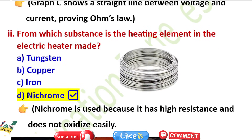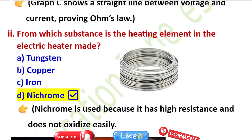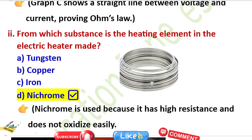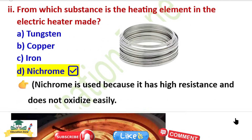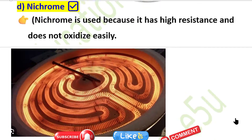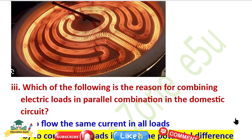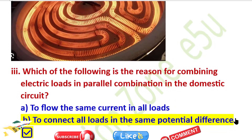Now question number 2: From which substance is the heating element in the electric heater made? The right answer is nichrome wire.